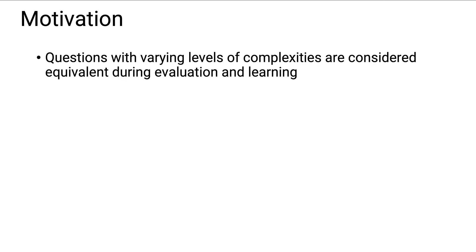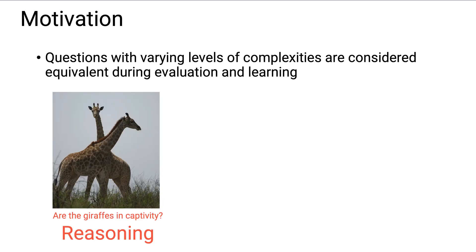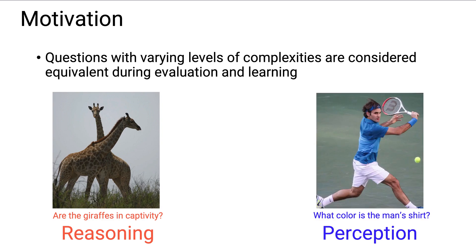To study this problem, we start by distinguishing between perception and reasoning questions. Reasoning questions are more complex — answering them requires aggregating perception with common sense understanding about the world. Perception questions, however, are simple, of the form: What color is the man's shirt? We start by identifying perception questions in the VQA dataset.